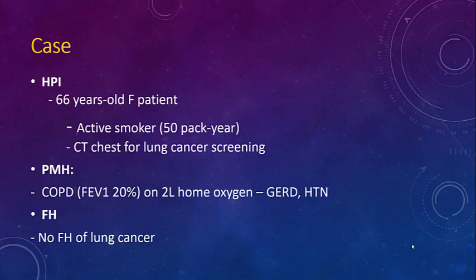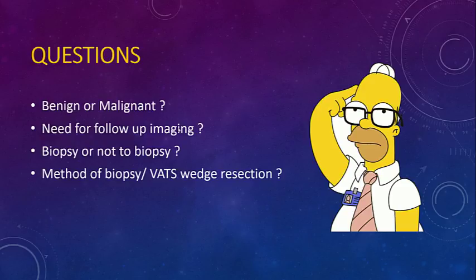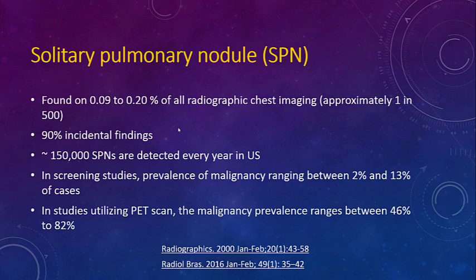Here is a case commonly seen in pulmonary clinic: a 66-year-old female, actively smoking with a 50 pack-year history, who had a CT chest for lung cancer screening. Her significant past medical history includes COPD with an FEV1 of 20%, she is on home oxygen, and has no family history of lung cancer. Her CT shows a solid nodule of 8 mm. The questions we want to answer: is it benign or malignant? Do we need follow-up imaging, biopsy, or wedge resection?